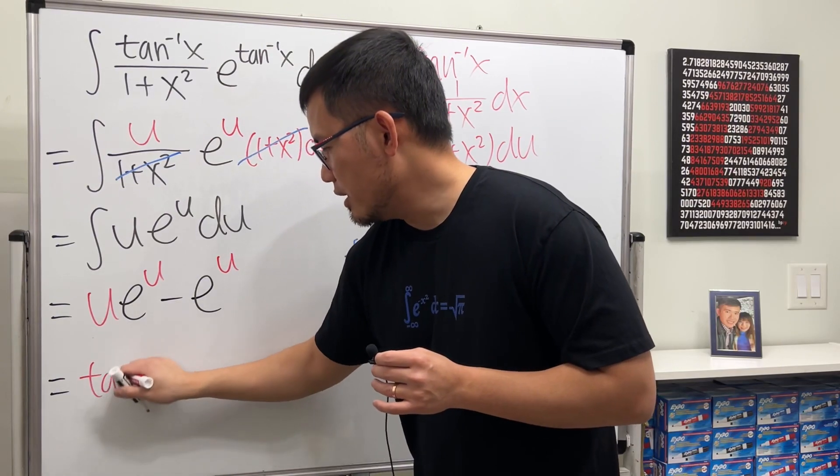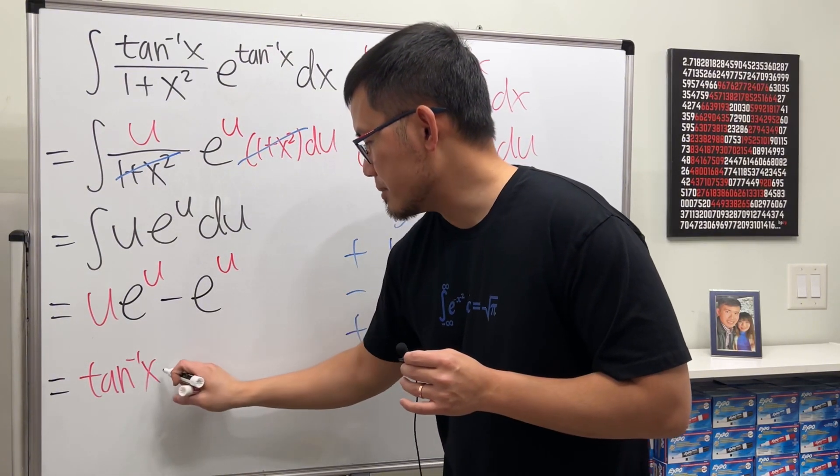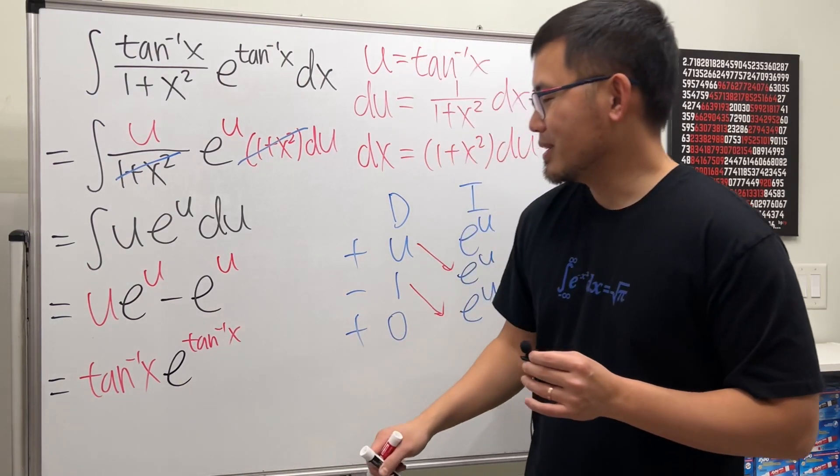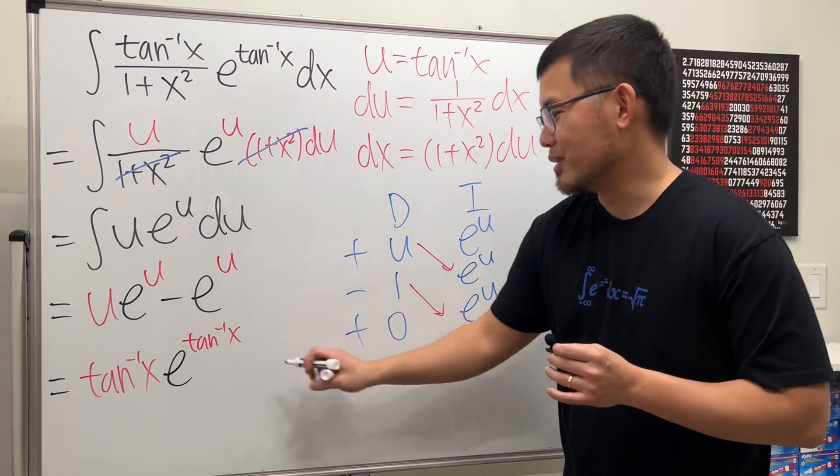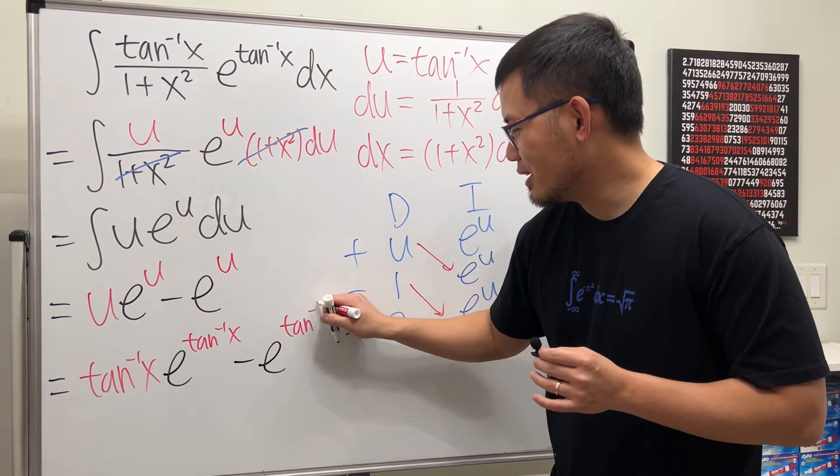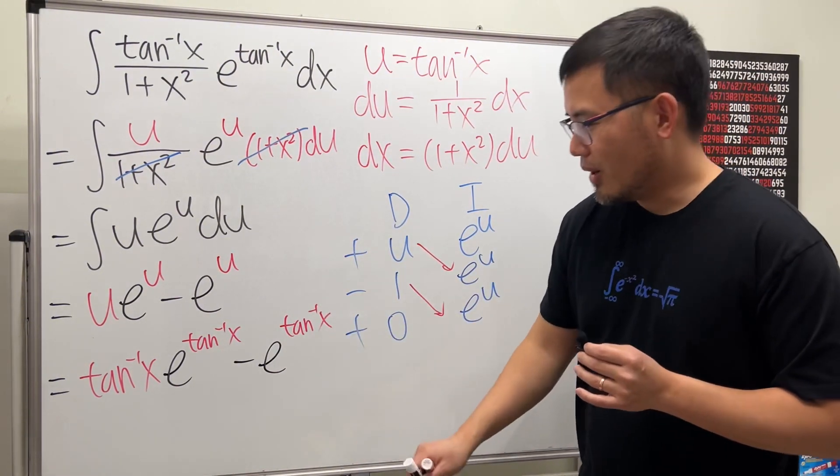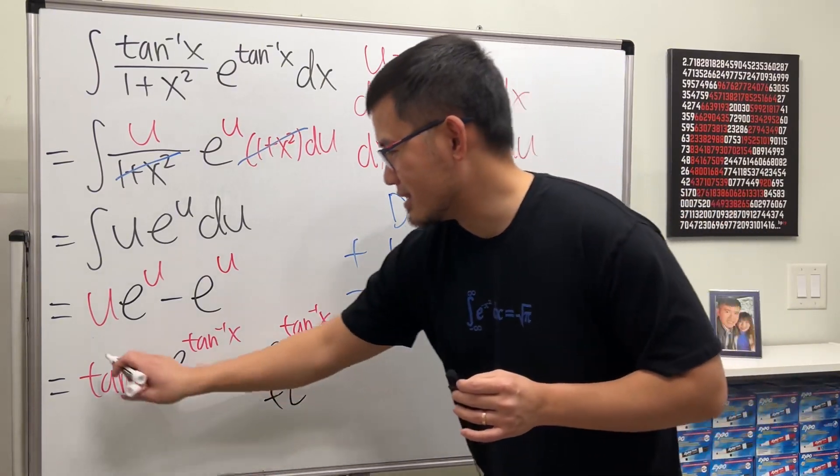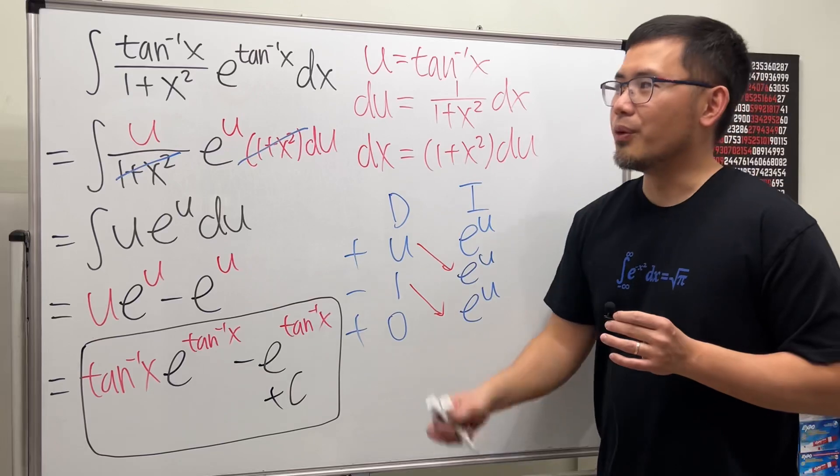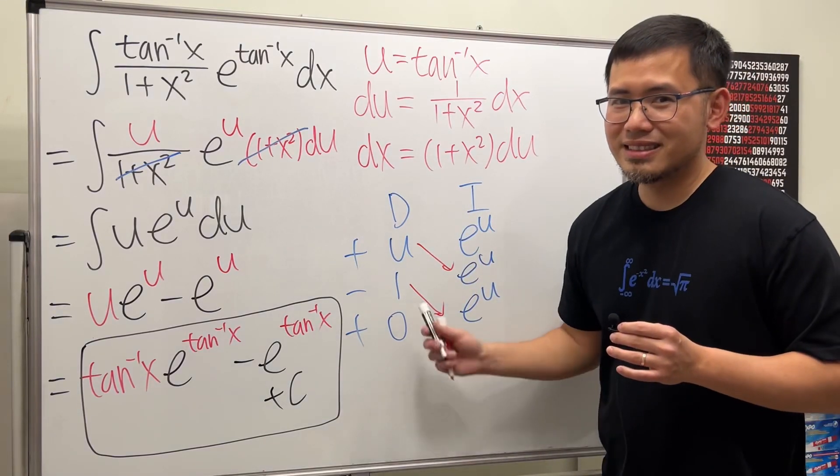And then finally, we just have to put the inverse tangent of x back to the u. So this right here we get inverse tangent of x times e to the inverse tangent of x. Yeah, this looks very intimidating, I have to agree on that. And then minus e to the inverse tangent of x.